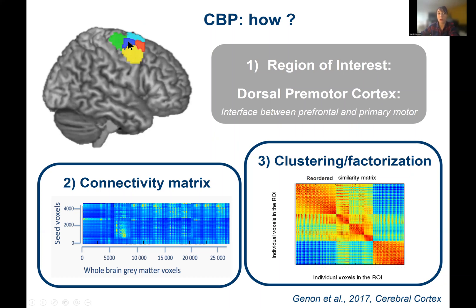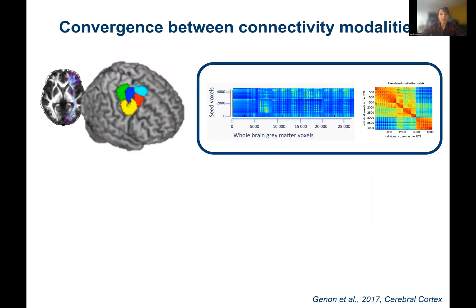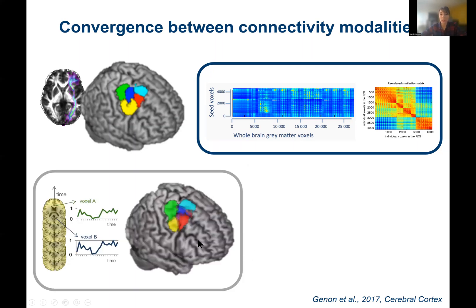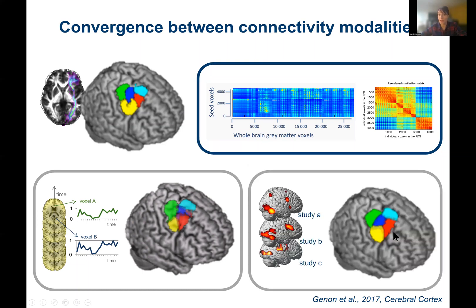We have a differentiation along the rostrocaudal axis and the ventral-dorsal axis within the dorsal premotor cortex. Using different connectivity features — tractography based on diffusion data, resting-state functional connectivity, or meta-analytic connectivity modeling — we see relatively similar patterns of organization. So different connectivity features converge towards the same pattern of organization within this region.